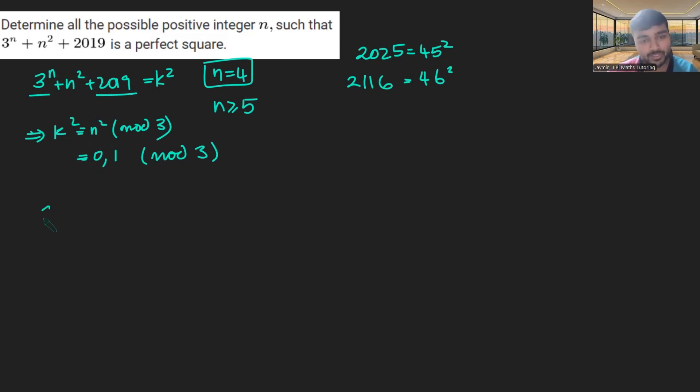Now let's look at this mod 4. So we have 3 to the n plus n squared plus 2019 equals k squared. Let's look at it mod 4. So k squared is going to be congruent to, well, 3 to the n, that's just minus 1 to the n, and then plus n squared. And then 2019, well, 2016 is a multiple of 4. So that would be just plus 3 mod 4.